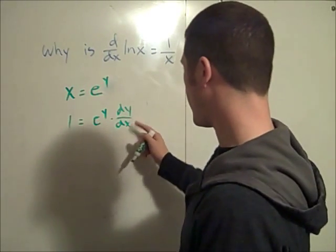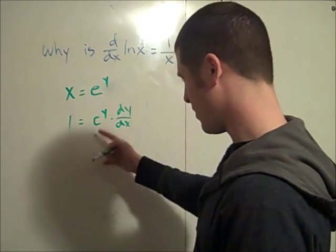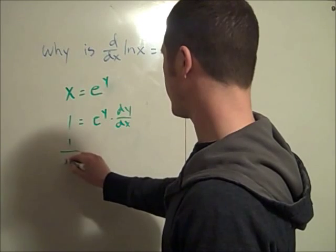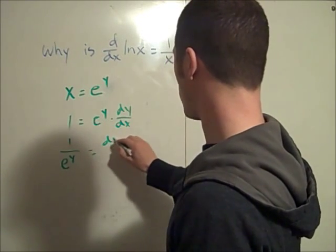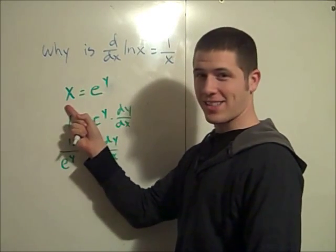And so dy dx, divide both sides by e to the y. So 1 over e to the y equals dy by dx. But e to the y is x.